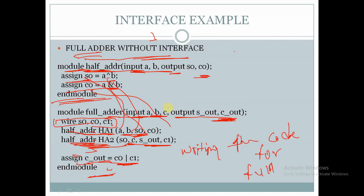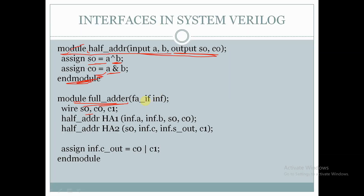In the full adder module, instead of declaring all the signals like in the previous example, while using the interface we will declare the interface instance itself. There is no need to declare all the signals separately. Here we are taking three variables of wire type and instantiating two half adders ha1 and ha2. We are passing the signals a, b, s0, c0 by means of the interface as inf.a, inf.b, and a, b are the signals of the interface. s0 and c0 are declared in this module, and for instance ha2 we are passing s0, c as interface type inf.c, and inf.s_out, c1.